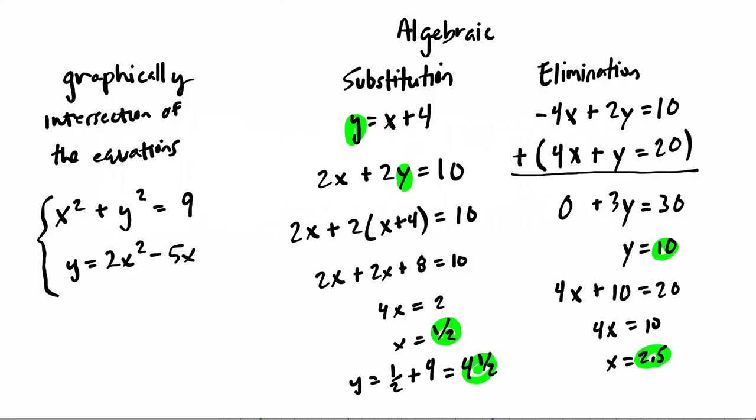And there are other ways to do elimination. If you don't want to add opposites, you could do other things. Let me show you what I mean and then we'll move on. If you started with negative 4x plus 2y equals 10 and the second equation was 4x plus y equals 20, you could, although it would be more work, double your second equation and then subtract.